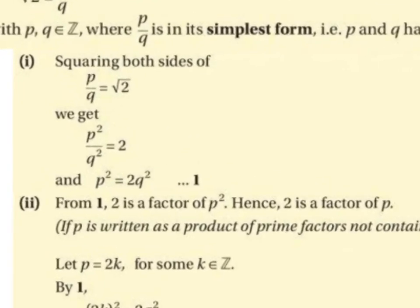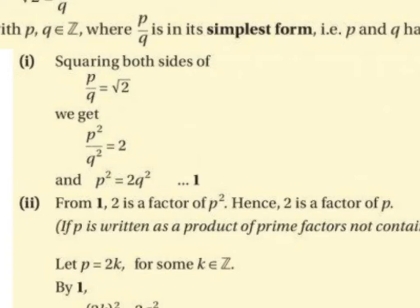So we have p over q equals root 2. We want to solve for p, so we start by squaring both sides. p over q squared gives us p squared over q squared, and root 2 squared gives us 2 — the square root of 2 multiplied by the square root of 2 gives us 2. So we have p squared over q squared equals 2. Solving for p squared, we multiply both sides by q squared, and we get p squared equals 2q squared.